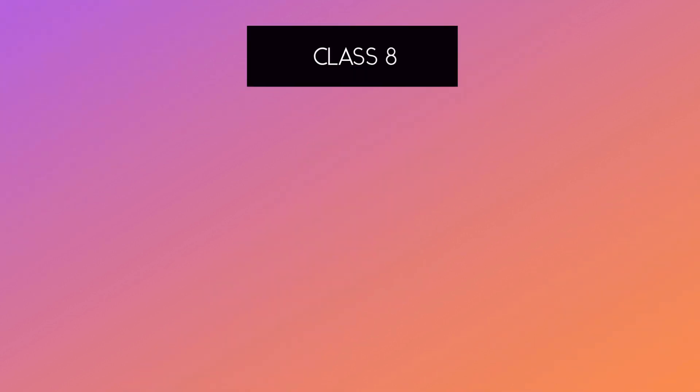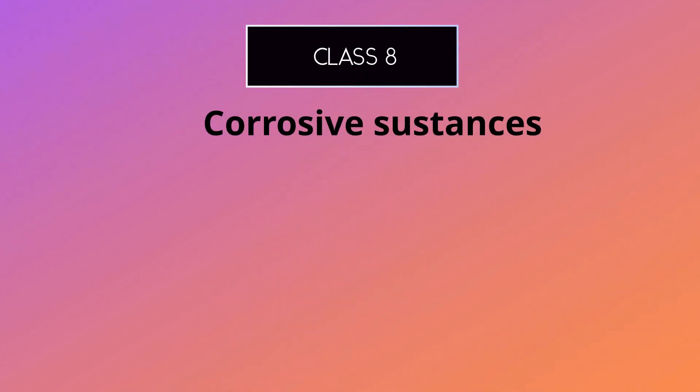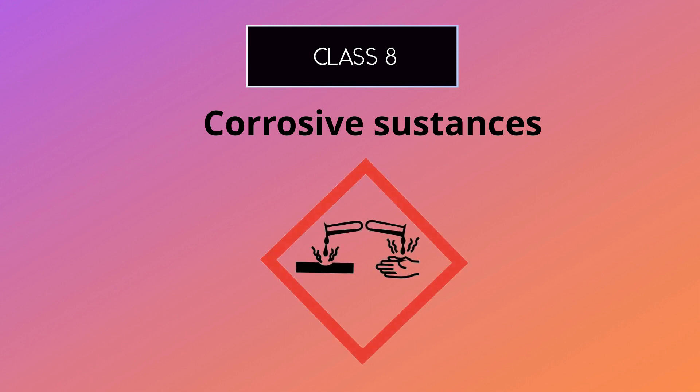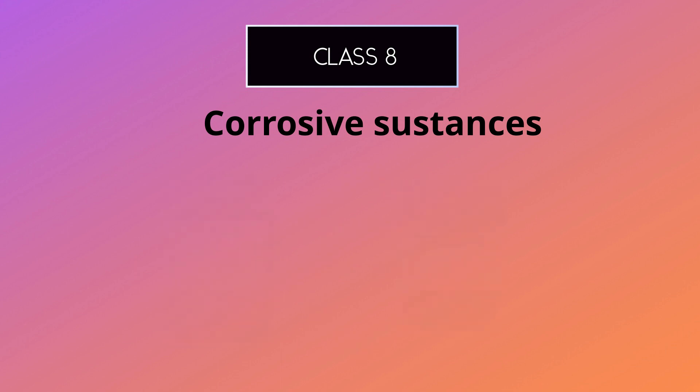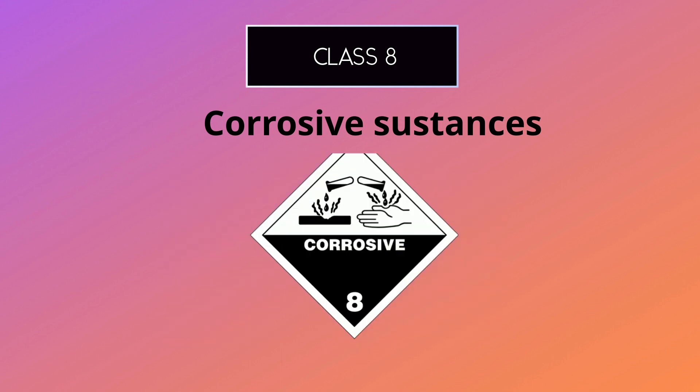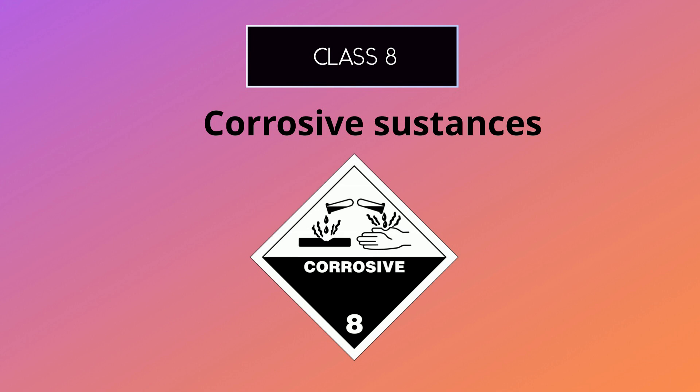The eighth class of dangerous goods is corrosive substances. This class includes materials that can corrode metal or other materials, including things like acids and alkalis. The symbol for corrosive substances is a test tube pouring liquid onto a hand with number eight.